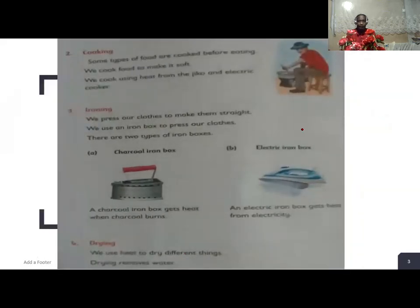The following are the uses of heat. Cooking: some types of food need to be cooked before eating. We cook food to make it soft. We cook using heat from the charcoal stove and the electric cooker.